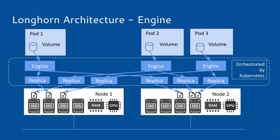I have a follow-up question. You said that the engine is always with the volume — meaning at the same node as the pod that's running. So in other words, Longhorn does client-side replication instead of server-side replication? Client-side replication means the client — where the volume is being used — is the one copying the data to two different nodes when a write comes in. Is that the way it works? Yes, if you think of the engine as the client, the engine copies data to two replicas.